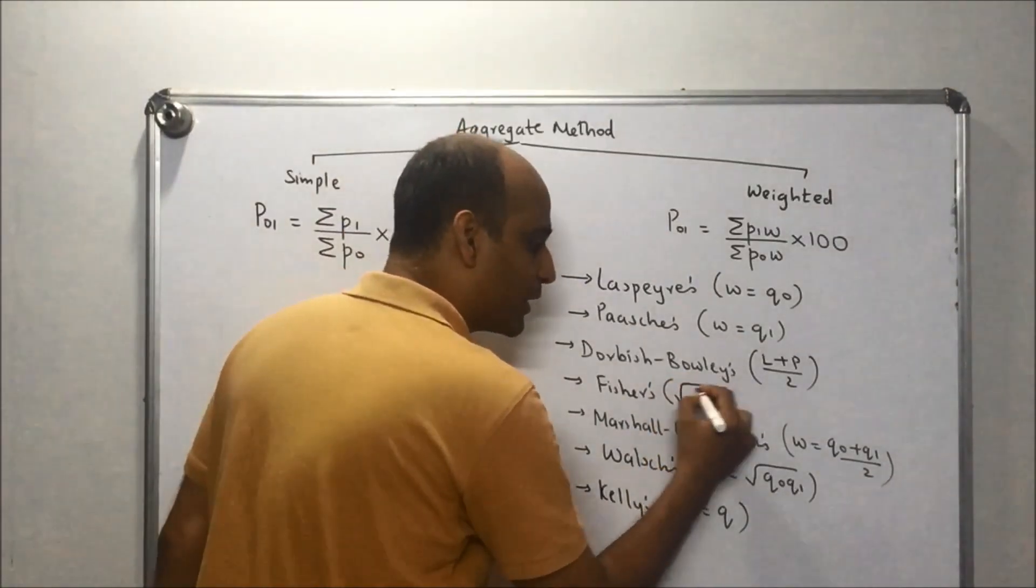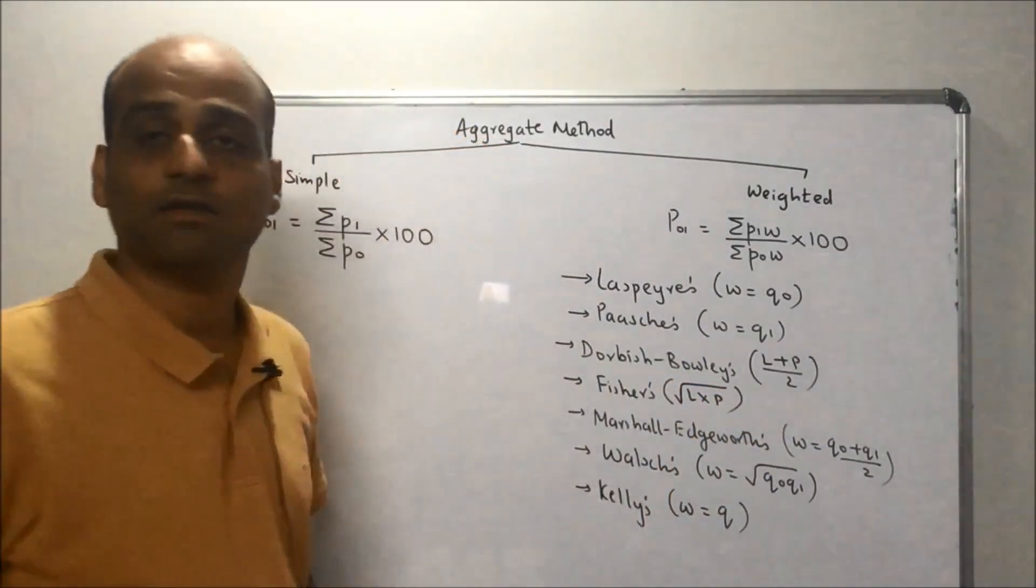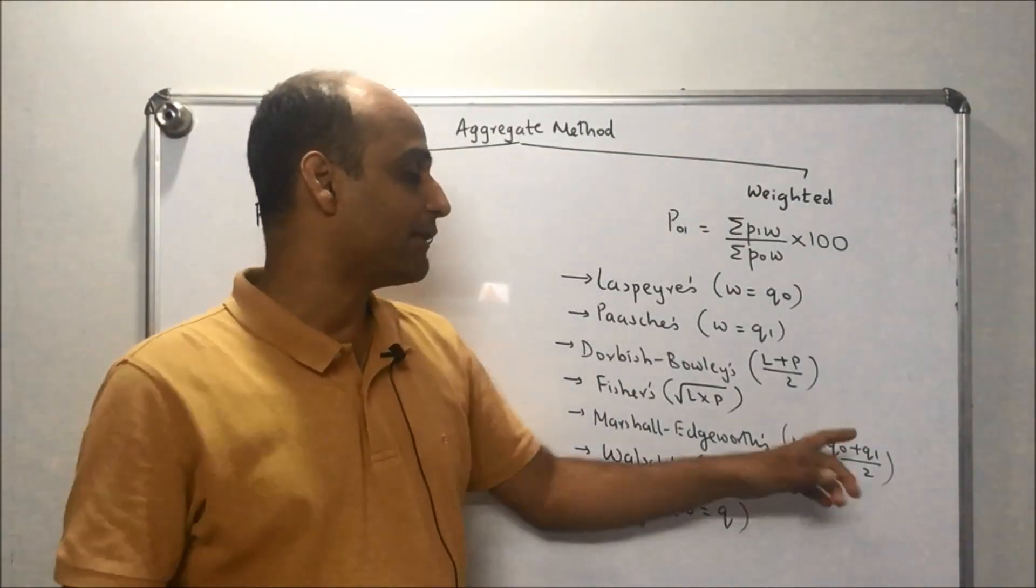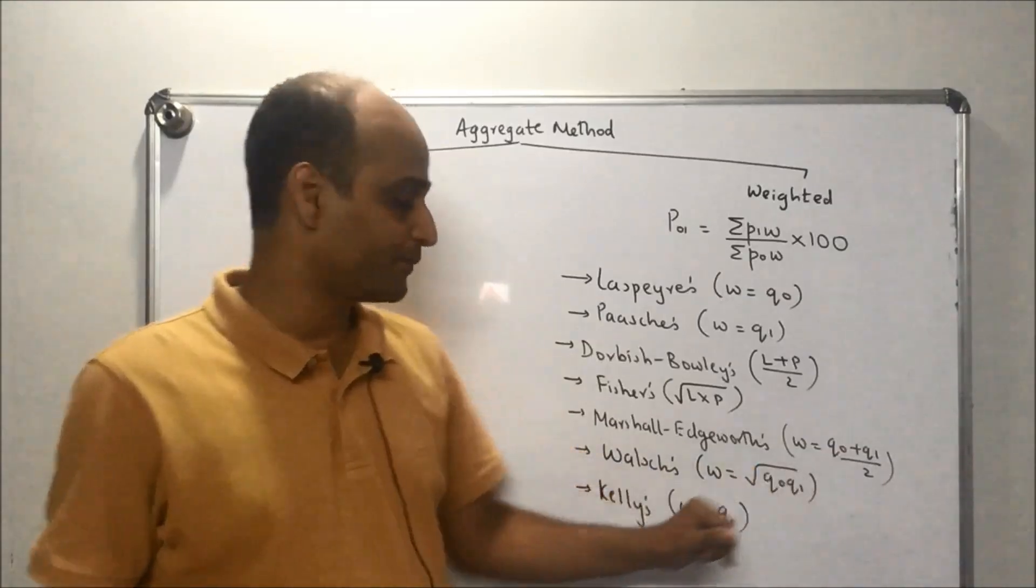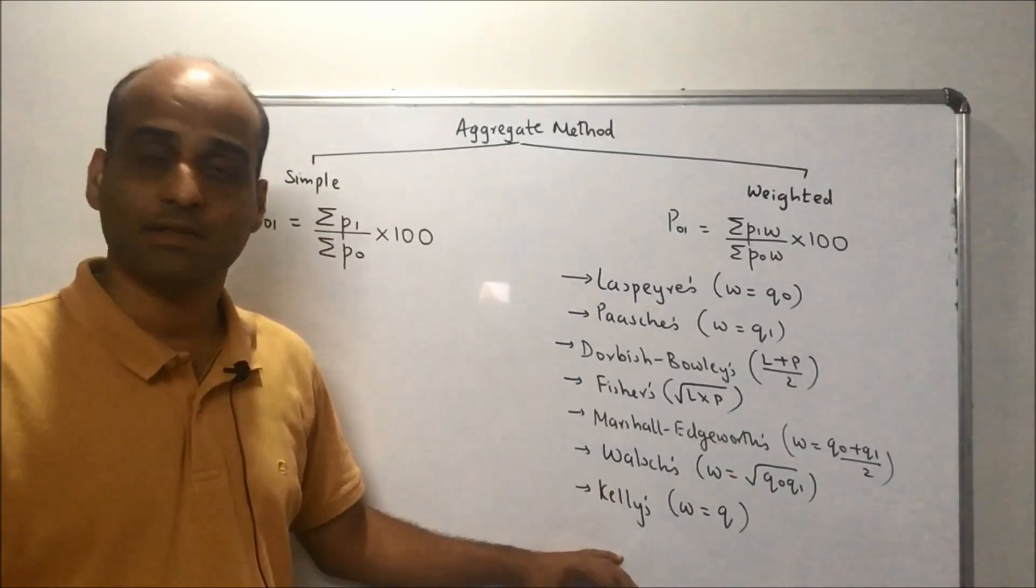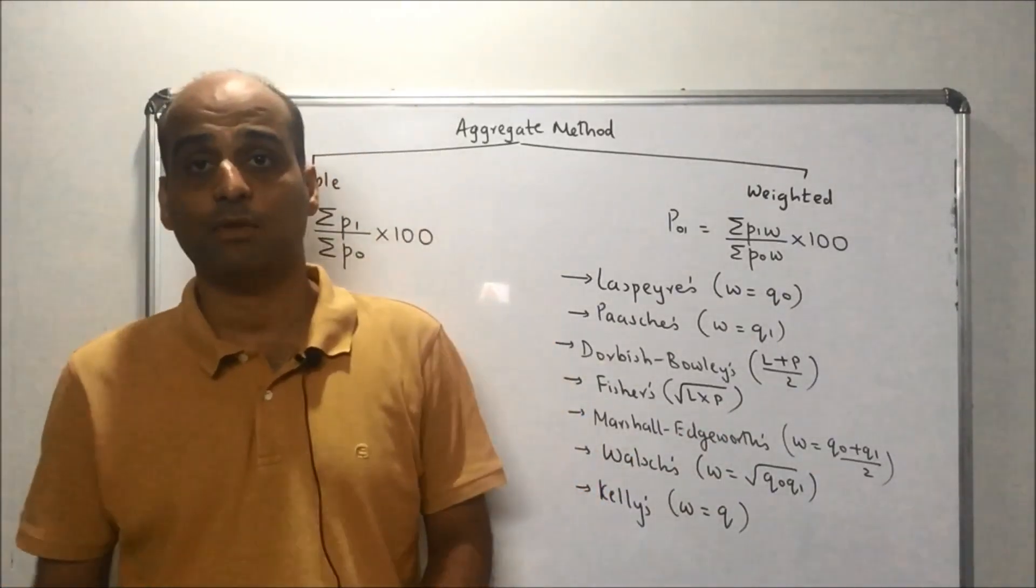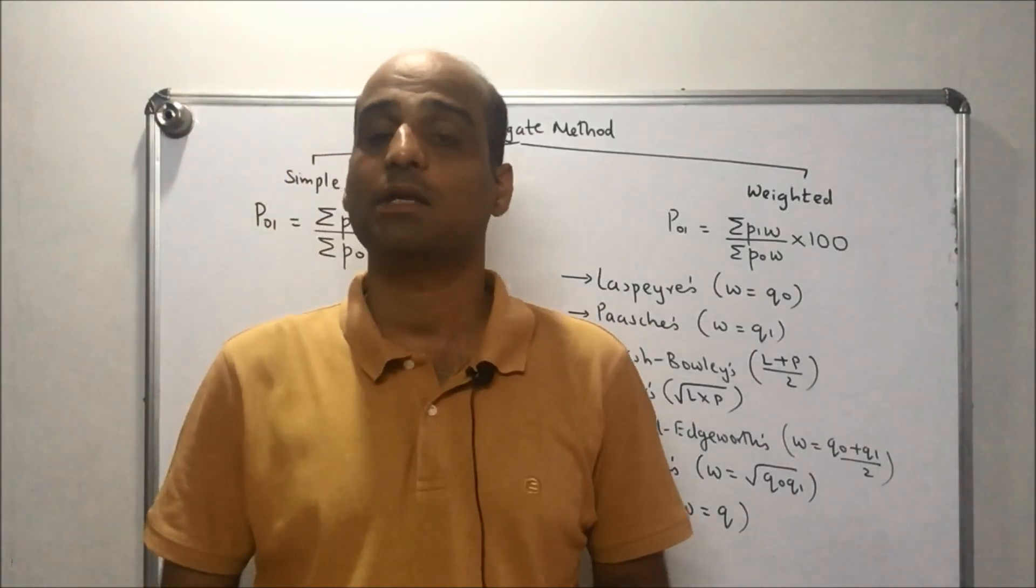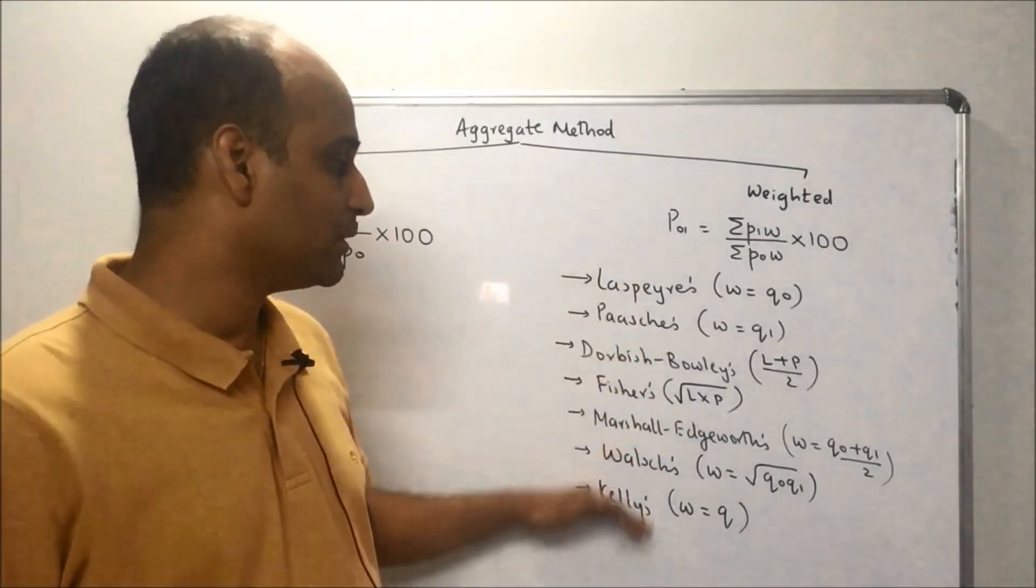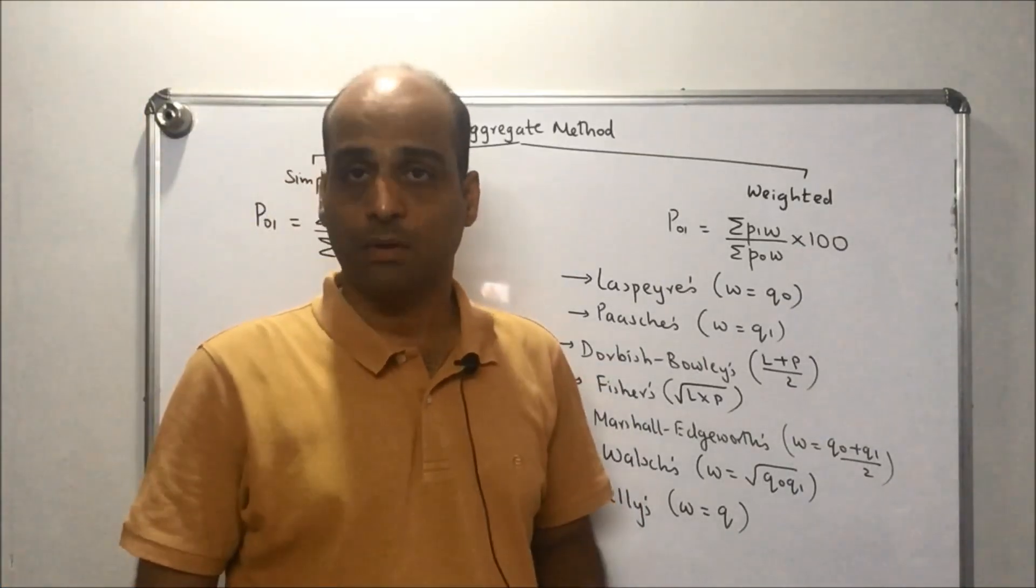Fisher's is the square root of L into P. In case of Marshall-Edgeworth, weightage is given to the average of Q₀ and Q₁. For Walsh, W is root of Q₀Q₁. In case of Kelly's index, W equals Q, where Q is a quantity lying between the base year and the current year. We'll talk about the weighted indices a bit more in detail, so keep watching.